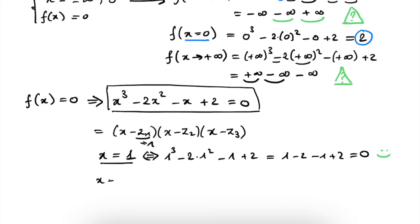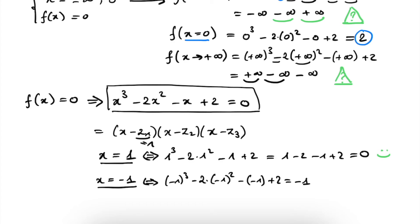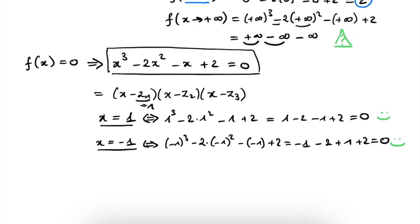Let's test x equal to minus 1: we get minus 1 cubed minus 2 times minus 1 squared minus minus 1 plus 2. This becomes minus 1 minus 2 plus 1 plus 2, and again we have zero. So we found our second zero, z2 is equal to minus 1. We can now rewrite our equation as (x minus 1) times (x minus minus 1) times (x minus z3), and we still have to find our third solution z3.